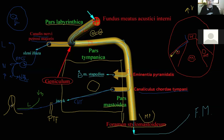The chorda tympani joins the lingual nerve and supplies the anterior two-thirds of the tongue on one side. The visceromotor parasympathetic fibers leave the lingual nerve and must be synapsed in a ganglion — the submandibular ganglion, located in the submandibular triangle, between the mandible and both bellies of the digastric muscle.